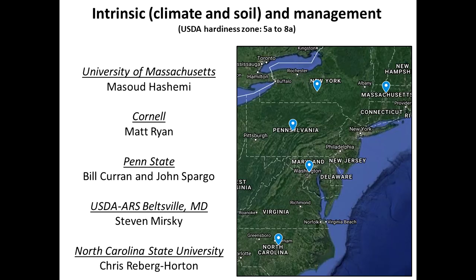Now I'll give an example of how management interacts with performance. We did a study up and down the East Coast — Massachusetts, New York, Pennsylvania, Maryland, North Carolina — planting hairy vetch cover crops following corn, and we wanted to look at how management combines across this latitudinal gradient and how that affects the cover crop's ability to perform and the subsequent corn yield.